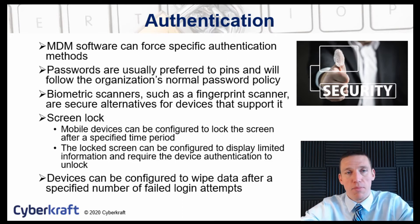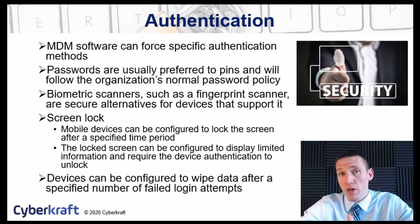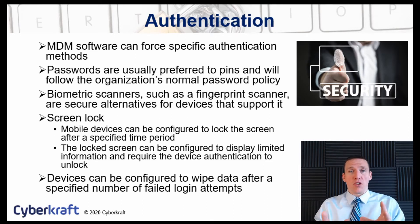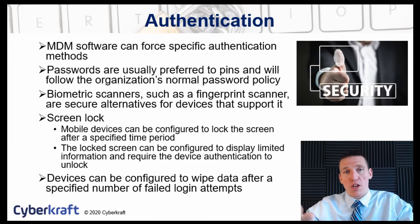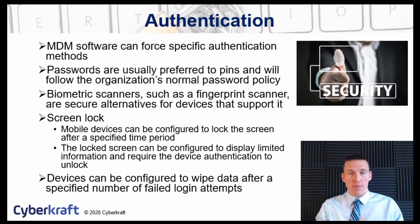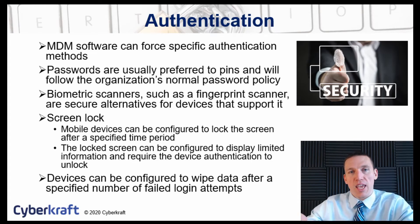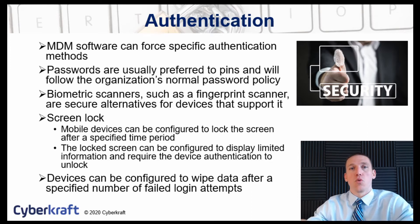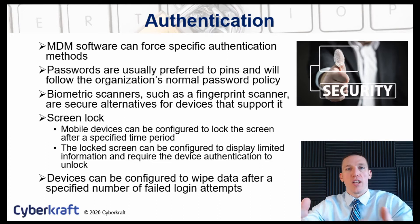Some devices have biometric authentication, which can come in the form of a fingerprint, face recognition, or a retina scanner. Biometric authentication has acceptable error rates and a crossover error rate, but it can be an acceptable form of authentication. If an organization wants to use two-factor authentication, they can combine a biometric scan or fingerprint scan with a password or PIN. The authentication method can only be controlled either if the organization issues the device, or through the use of mobile device management software on a user's personal device.